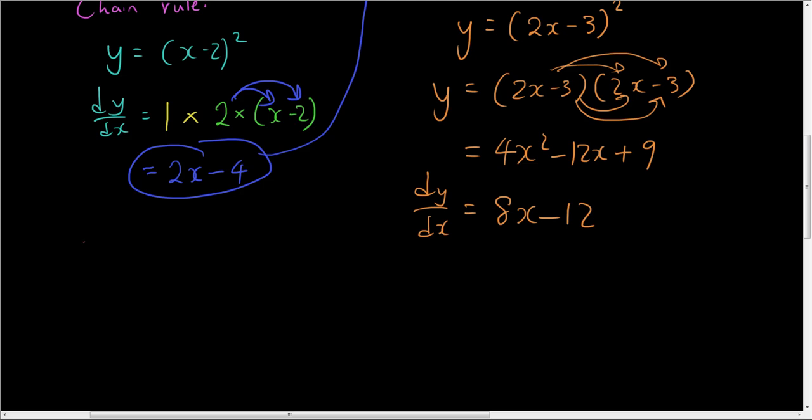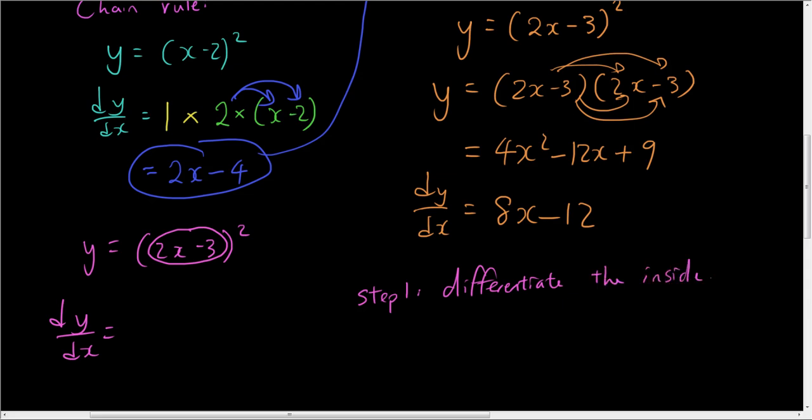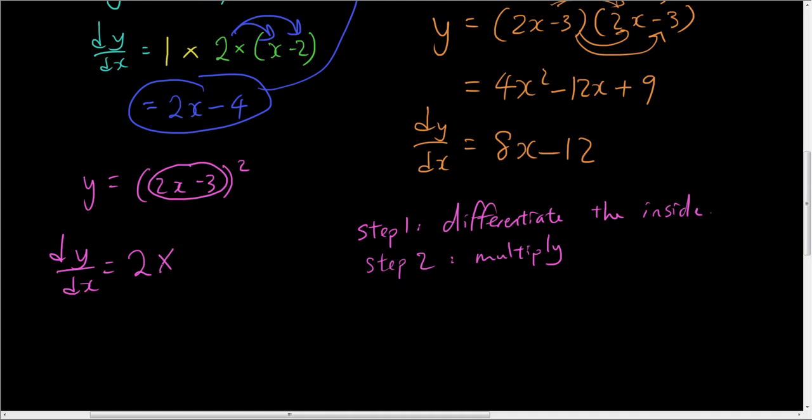which is y equals (2x - 3) squared. What I can do is I firstly differentiate the inside. So step 1. Differentiate the inside. So now 2x minus 3. That differentiates into 2. And then step 2. Multiply.